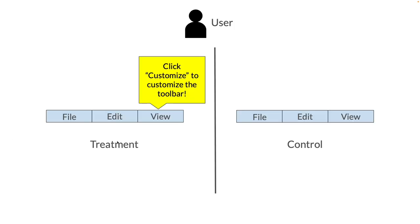For example, suppose a user named Alice has two accounts, one in treatment and one in control. Alice is in an experiment that examines the effect of tooltips on how often users use new features. Alice learns about the new feature from a tooltip in her treated account and proceeds to use the new feature in both her accounts. Therefore, treatment has spilled over from Alice's treated account to her control account.